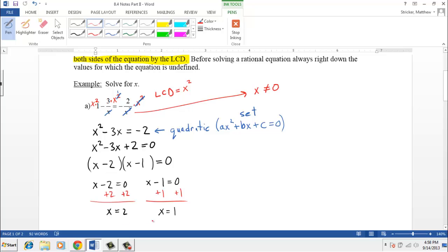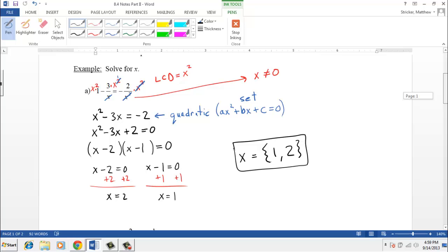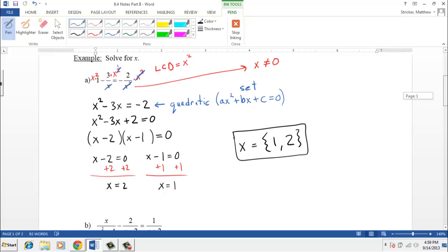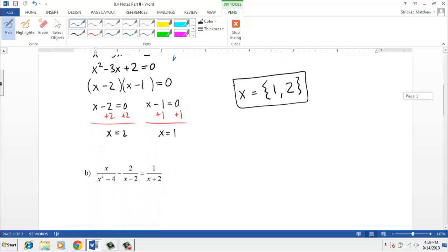Now since both of our solutions, x equals two and x equals one, neither one of them are equal to zero, that means neither one of those solutions are extraneous. So we're going to include both one and two in our solution set. Now it's actually a good habit with these problems to write down what values of x we can't have at the very beginning of the problem. Let's go ahead and do that in this next one.